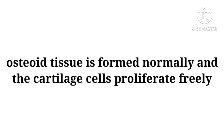Osteoid tissue is formed normally and the cartilage cells proliferate freely, but mineralization doesn't take place. Osteoid tissue is the unmineralized organic portion of the bone matrix. The cartilage has tissues and they start dividing and increasing, but there is no mineral present. In this way, it doesn't grow and the bone growth is disrupted.